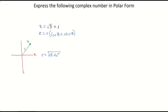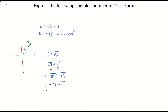My complex number is root 3 plus 1i, so I label root 3 as A and the number in front of i, which is 1, as B. Substituting into the formula, R equals the square root of (root 3) squared plus 1 squared. Root 3 times root 3 is 3, and 1 times 1 is 1, so R equals the square root of 4, which is 2.